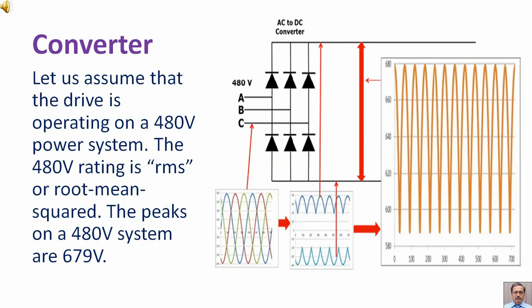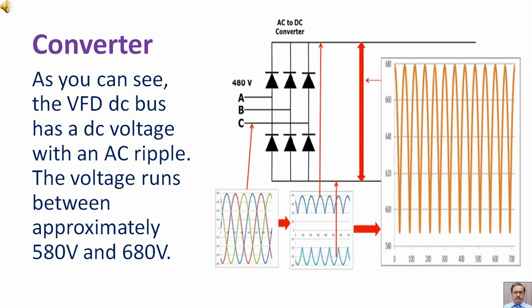Let us assume that the drive is operating on a 480 volt power system. The 480 volt rating is RMS or root mean squared. The peaks on a 480 volt system are 679 volts. As you can see, the VFD DC bus has a DC voltage with an AC ripple. The voltage runs between approximately 580 volts and 680 volts.